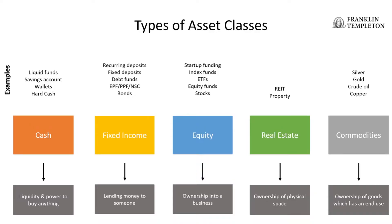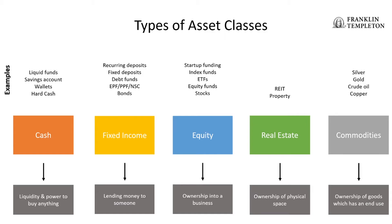A quick recap on the previous episode. We discussed about the main asset classes, their fundamental nature, and examples of investments under these asset classes. Then we looked into the Equity Asset Class and saw that U.S. Broad Equity has generated an average return of 9.6% over more than a century, which significantly outperformed both bonds and cash returns, and also inflation.